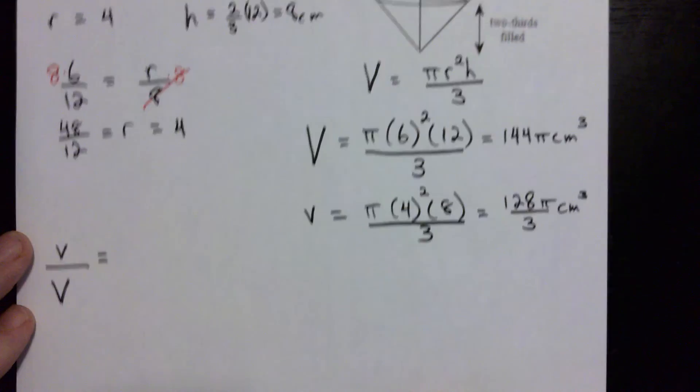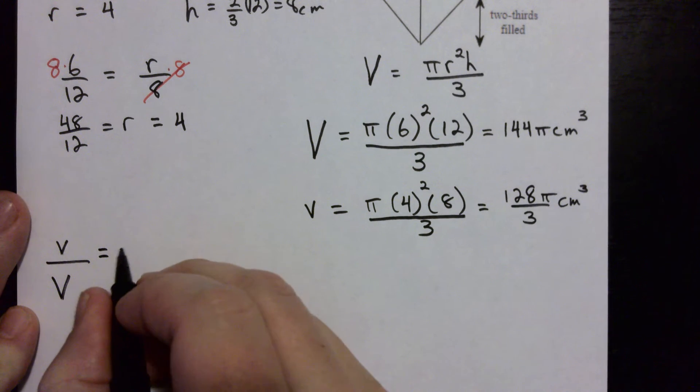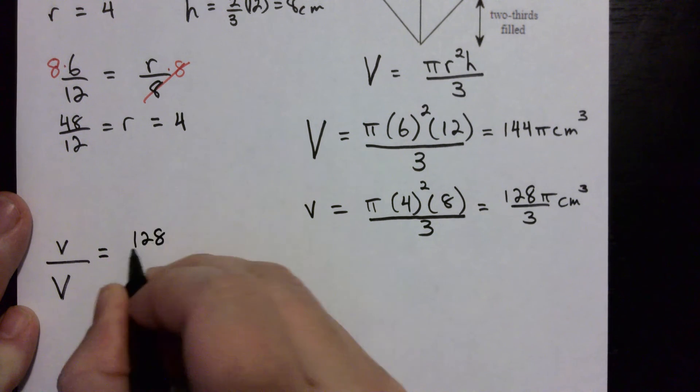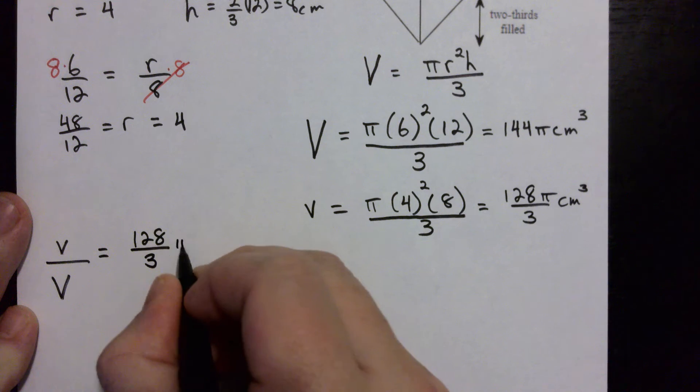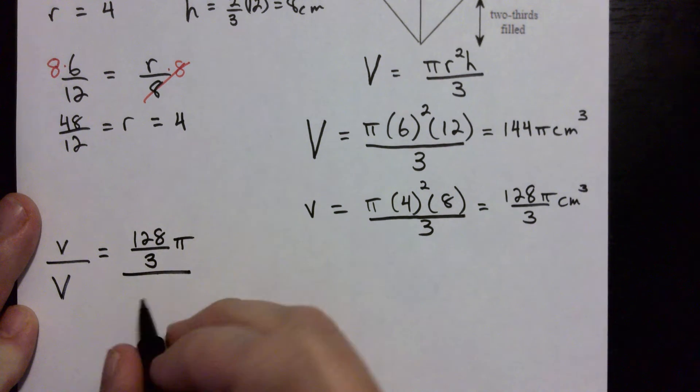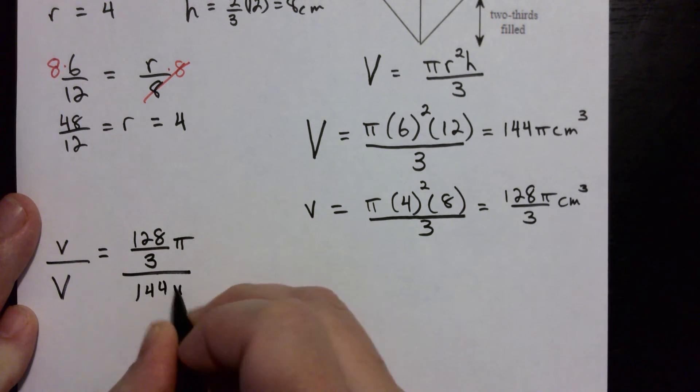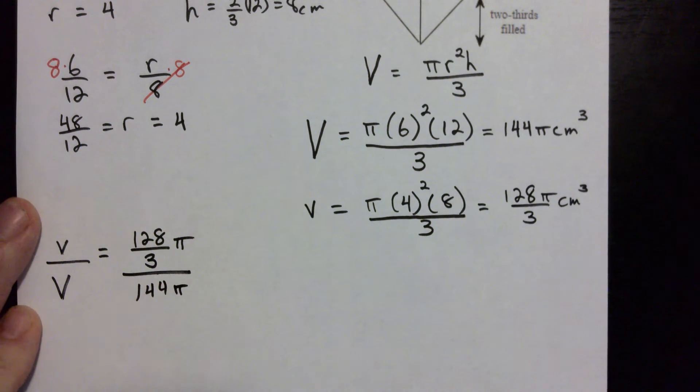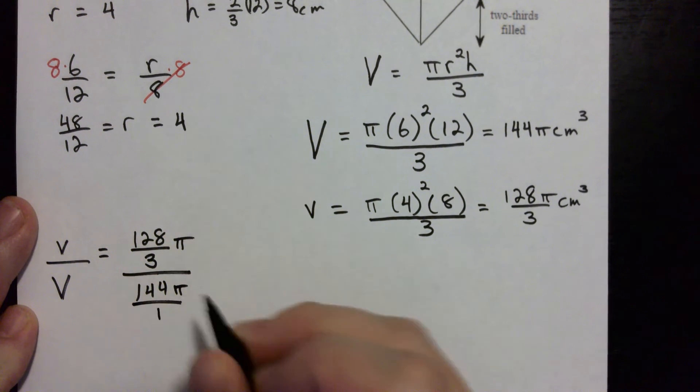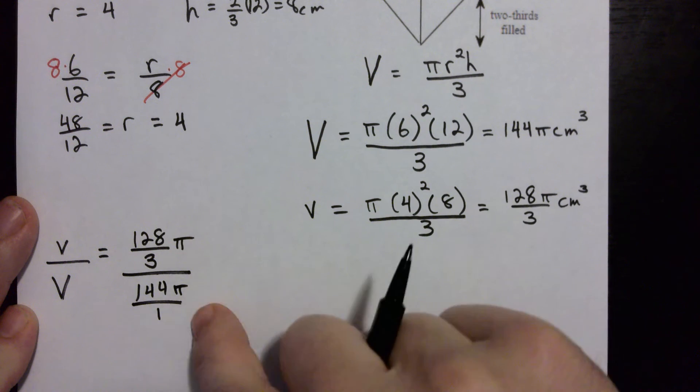Which is equal to, let's see, 128 over 3 π divided by 144 π. Okay, this is a complex fraction so I'm going to put a 1 underneath and I'm going to flip this one, turn it upside down and multiply it in my next step.